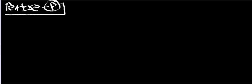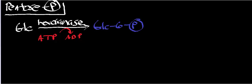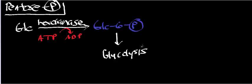We can divide the pentose phosphate pathway into an oxidative phase and a non-oxidative phase. Before we get into it, let's recall something. We have glucose in the cell, and the enzyme hexokinase — or more specifically glucokinase — is going to attach a phosphate via nucleophilic acyl substitution, it kicks off ADP, and we end up with glucose 6-phosphate. The glucose 6-phosphate can go one of two directions: it can go towards the rest of glycolysis, or it can go into the pentose phosphate pathway.